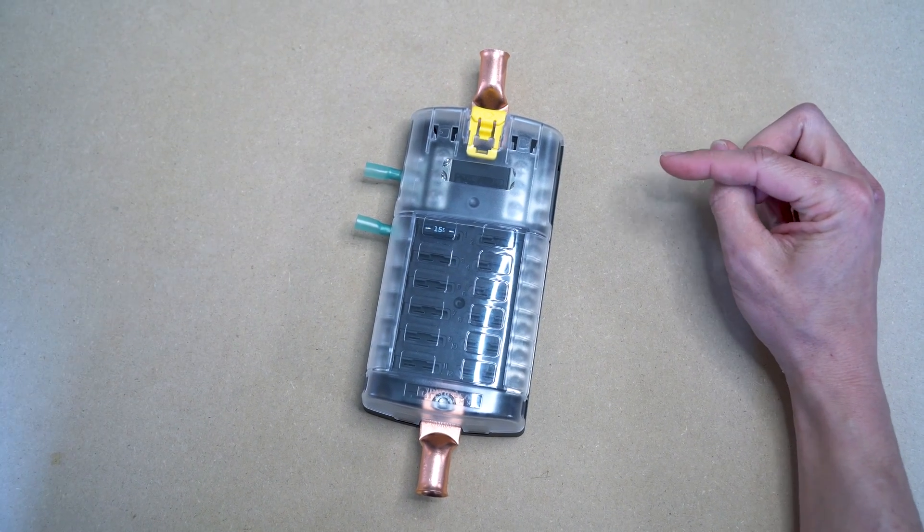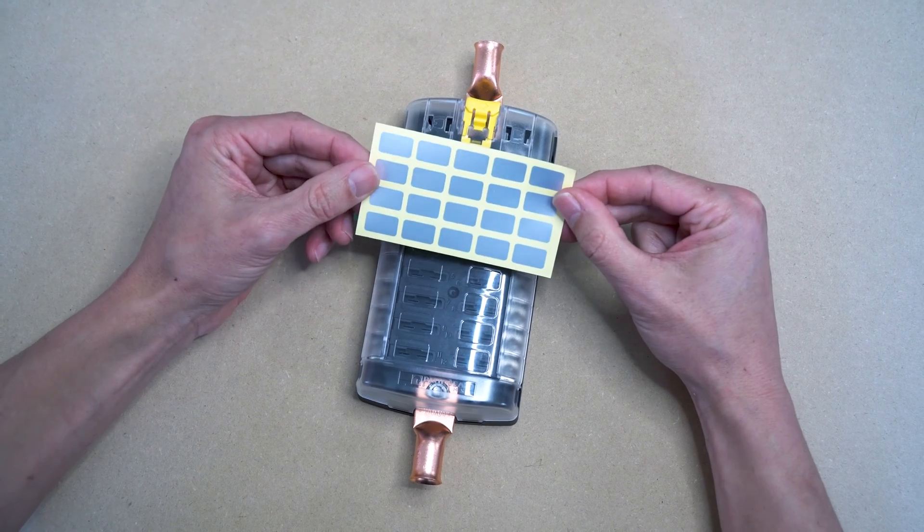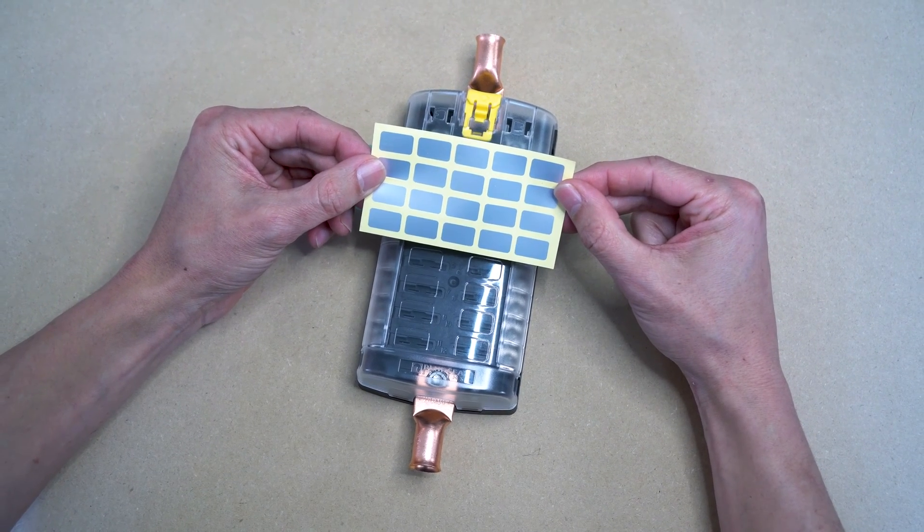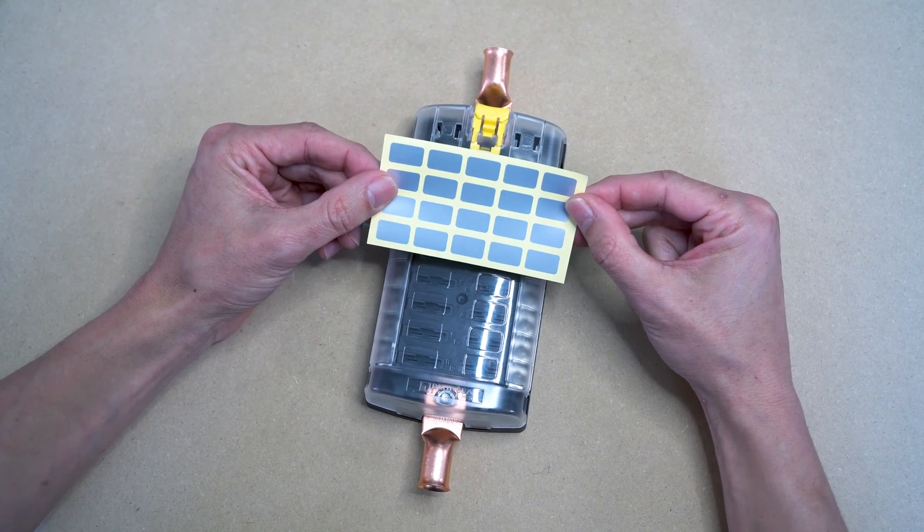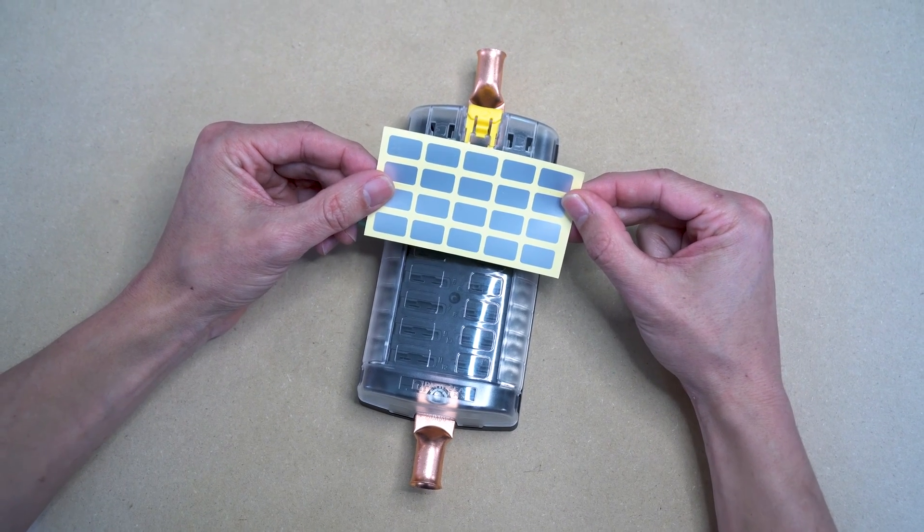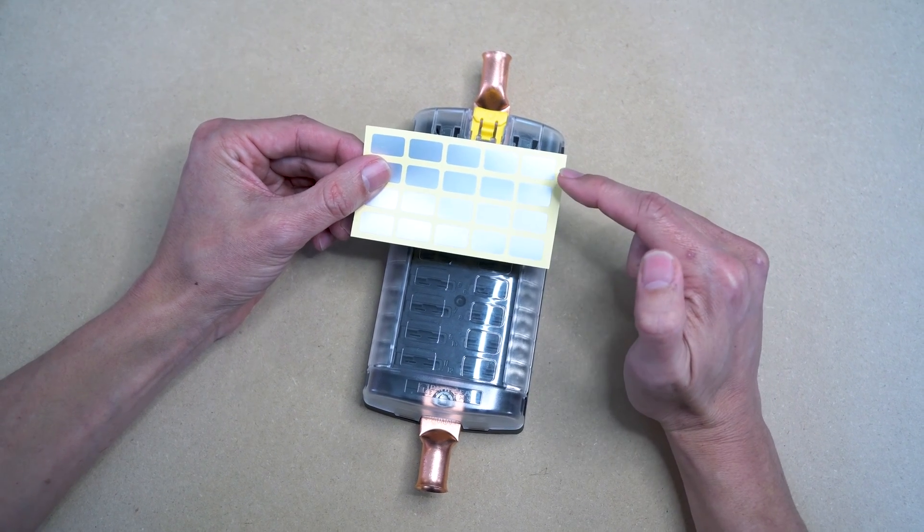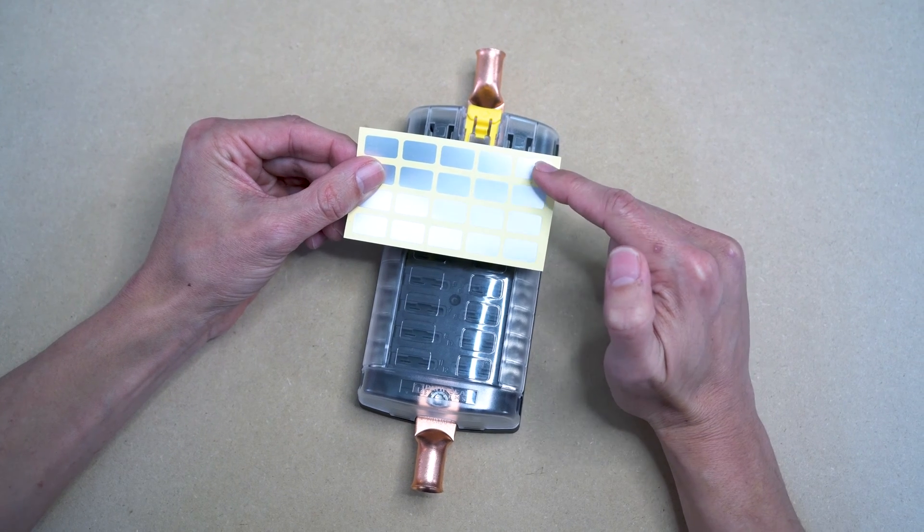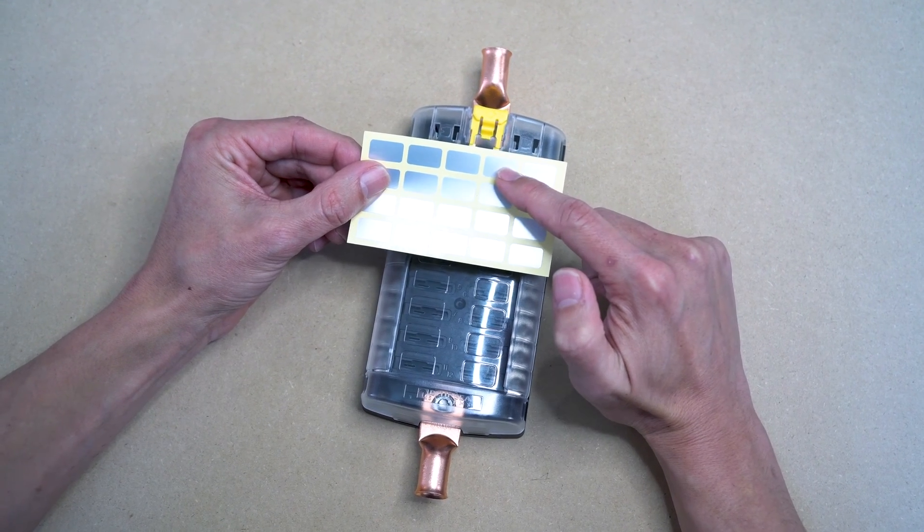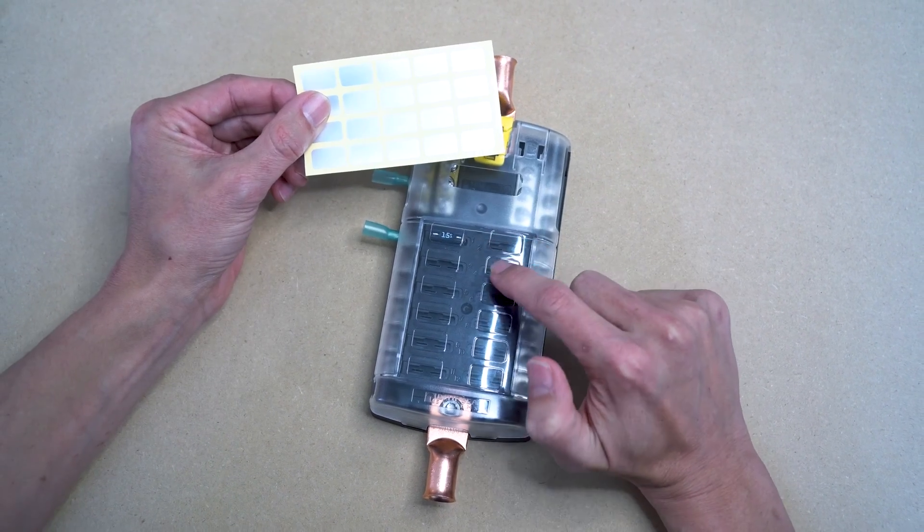This Blue Sea Systems panel also comes with handy labels so that you can identify each individual circuit. This can be particularly handy when you're wiring lots of different DC devices. You just write the name that each circuit is heading to, like a fridge or a ventilation fan, and place a sticker in the appropriate placed groove.